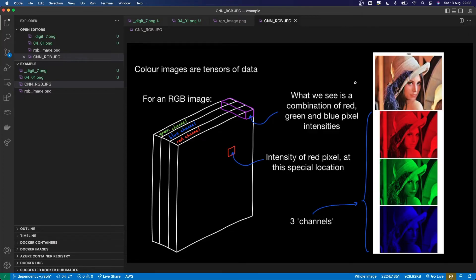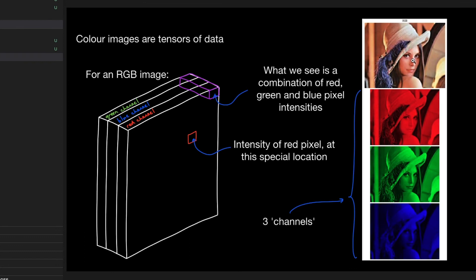A more instructive example is maybe this one, where you can kind of see the image is represented as a stack of these different grids — it's a stack of matrices, or a tensor. The first channel represents the red channel, the second one the blue channel, and the third one the green channel. Each of those channels is a 2D grid which contains numbers in every pixel position, representing the intensity of that colour in that position. And when you combine these together, you get a colour image.